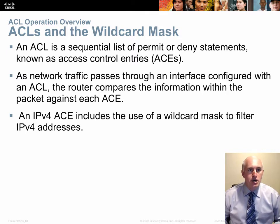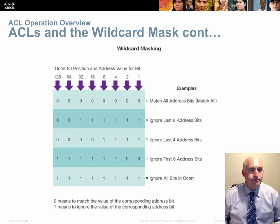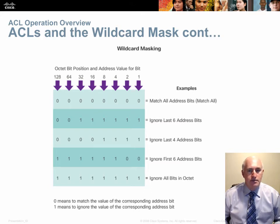We use something called a wildcard mask to help filter addresses, so we can do groups like whole subnets, whole networks, or an individual host. If the mask specifies zeros, the bits in the comparison address are compared. If ones are specified, the bits are ignored.